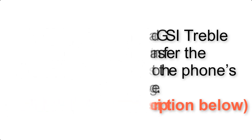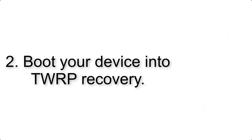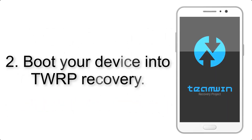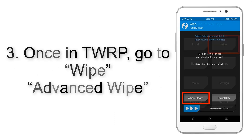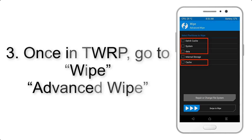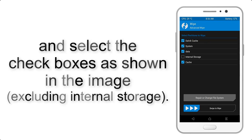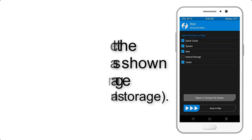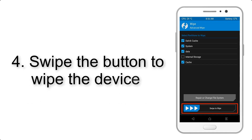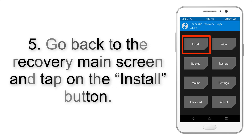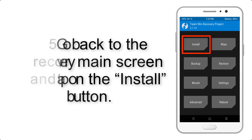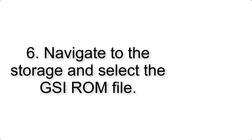Step 2: Boot your device into TWRP recovery. Once in TWRP, click on Wipe, then Advanced Wipe, and select the checkboxes as shown in the image, excluding internal storage. Step 4: Swipe the button to wipe the device.